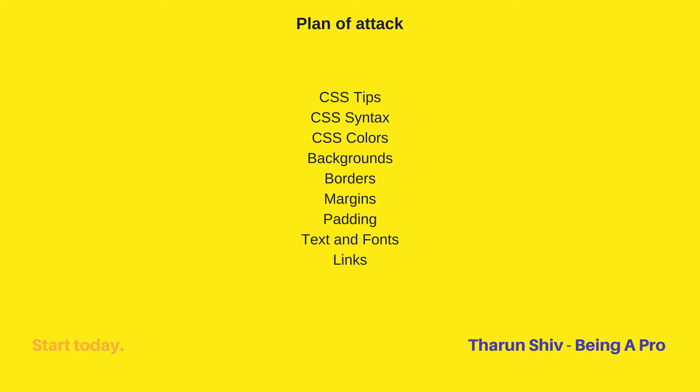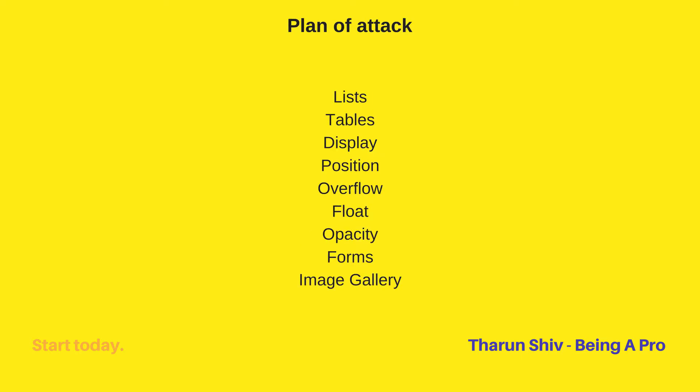Then we'll move on to CSS links — how you could style them and the cool things you could do with them. Then we'll move on with styling lists, styling tables, and the display option. Then we'll move on with CSS position, which is one of the important things where you'll be dealing with objects and their relative positions. Then we'll cover CSS overflow, which we came across in our navigation bar in the HTML series, so you'll understand what overflow does.